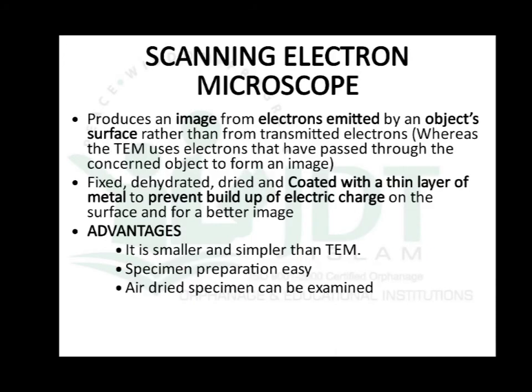Now coming to the scanning electron microscope: the main difference from TEM is that in SEM we produce an image from electrons emitted by the object surface rather than from transmitted electrons. In TEM, transmitted electrons are used for image production, but in SEM we use electrons emitted by the object surface. For specimen preparation, we fix, dehydrate, and dry the specimen, then coat it with a thin layer of metal to prevent buildup of electric charges on the surface for a better image.